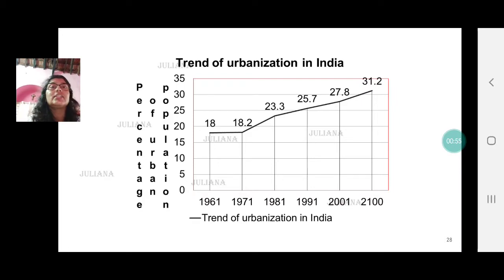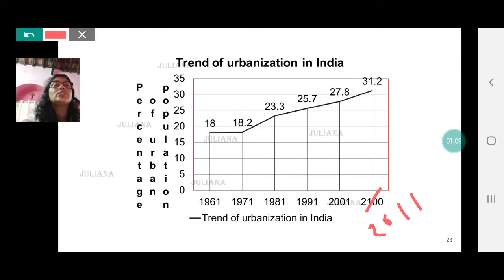On page 48 you have this graph that gives you the urban population right from 1961 to 2011. There is a mistake over here, this is 2011. Now what you notice about the urban population is that there is a steady increase from 1961 onwards from 18 to 18.2 to 23.3 percent urbanized to 25 percent, 27.8 percent and ultimately 31.2 percent urbanized.